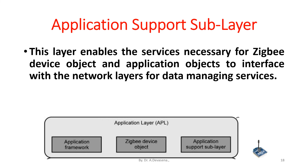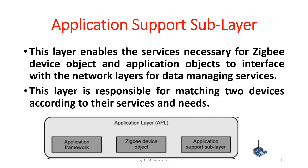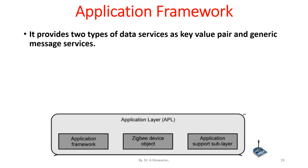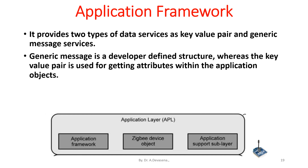The application support sublayer enables the services necessary for ZigBee device objects and application objects to interface with the network layers for data management services. This layer is responsible for matching two devices according to their service needs. Application framework provides two types of data services: key value pair and generic message services. Generic message is a developer-defined structure, whereas the key value pair is used for getting attributes within the application objects.